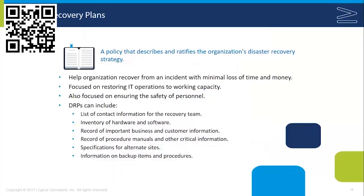Disaster recovery plans are a policy that describe and ratify the organization's disaster recovery strategy. This helps organizations recover from an incident with minimal loss of time and money. High availability and fault tolerance is more about keeping the system up and running, whereas disaster recovery is about getting it back up and running once it has failed.